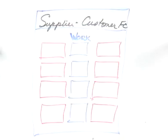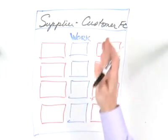Today what we want to do is cover three more types of flowcharts. The first one is the customer supplier flowchart.